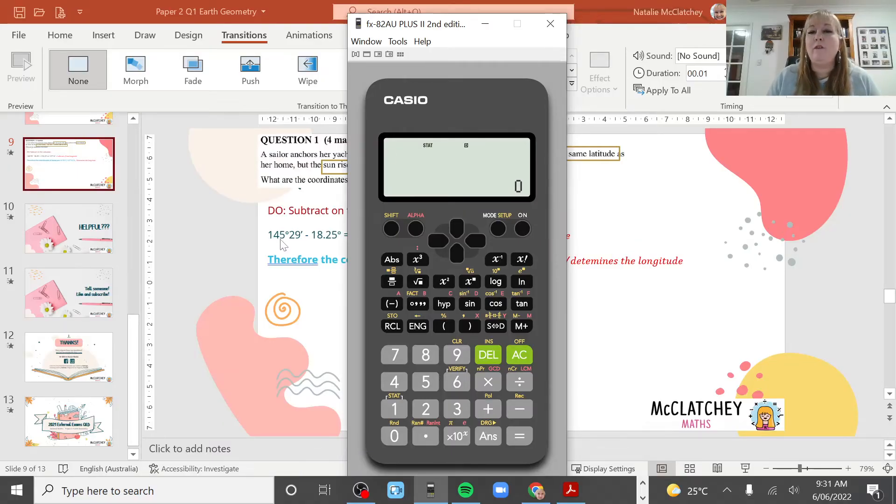I'm going to be doing 145 degrees and I've got these 29 minutes, and that's where a lot of people get a bit confused because we've got this 18.25 degrees and they're in different units. 0.25 of a degree is different - it's actually part of a degree which means it needs to be changed into minutes.